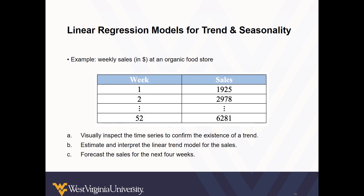So let's consider weekly sales in dollars at an organic food store. This example uses the organic data set. In our evaluation, we'll visually inspect the time series to confirm the existence of a trend, estimate and interpret the linear trend model for sales, and forecast the sales for the next four weeks.